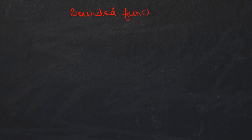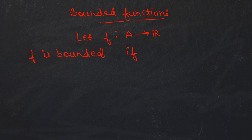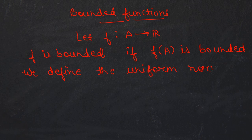Now we define what is meant by bounded functions. Let f be a function from A to the set of real numbers. We say that f is bounded if f(A) is bounded. Having understood the concept of boundedness of a function, we define the uniform norm. The uniform norm — which you will study in detail in metric space theory — is denoted by the norm symbol, and the norm of f on A is defined as the supremum of |f(x)| over x in A.